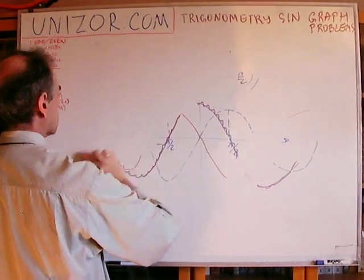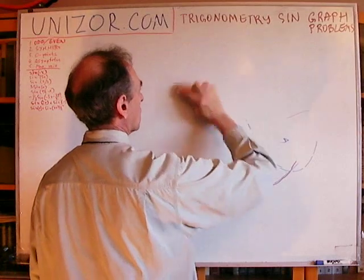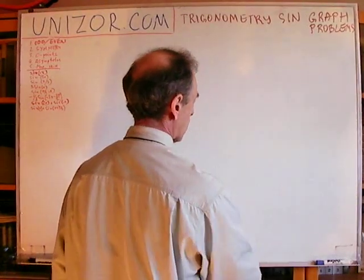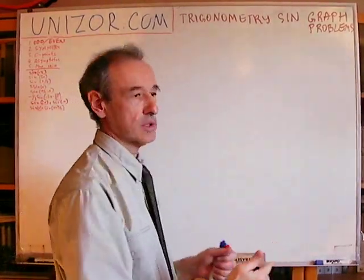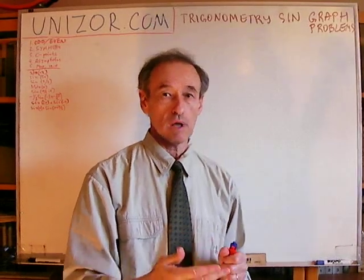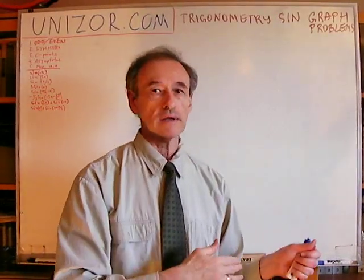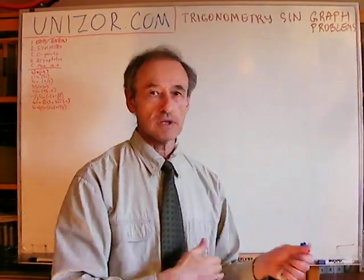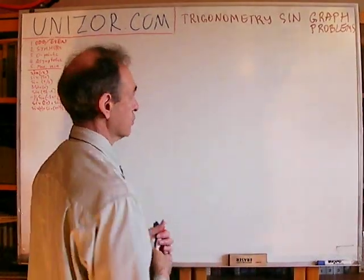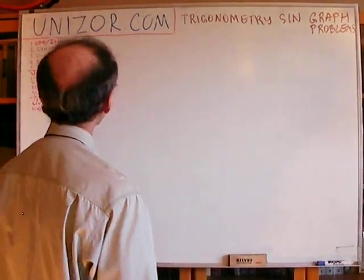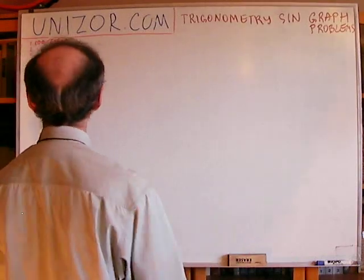I was using the general graph theory: if you add some constant to the argument, the graph moves left or right depending on the sign of that constant. If it's negative, it moves to the right. If it's positive, it moves to the left.